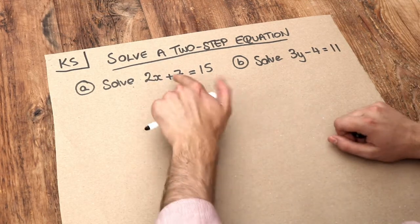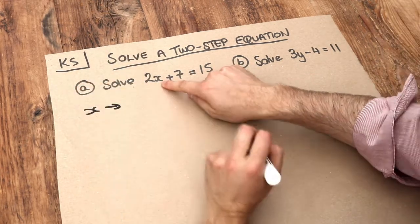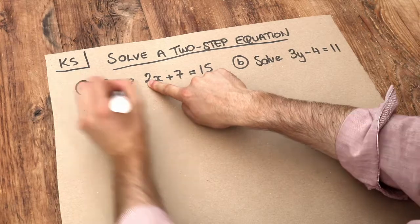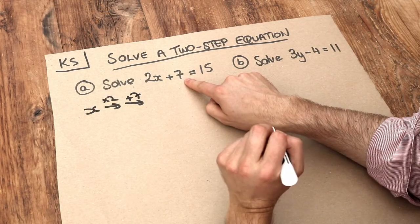What I like to think about is: what is the story of what's happening to x? We can see that x is being multiplied by 2, and then you're adding 7 to it. So we can think of it as like a number machine.